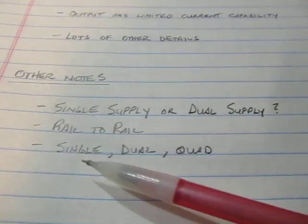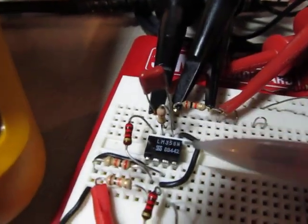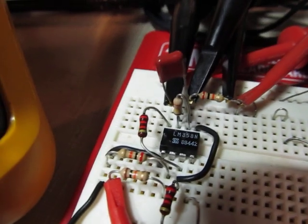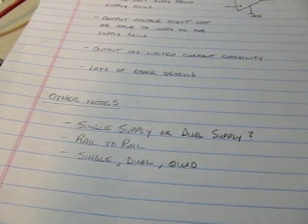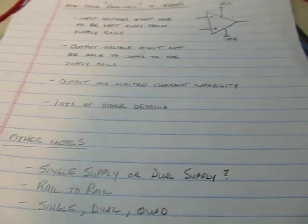And then op-amps are typically in single, dual, or quad packages. This very popular LM358 I've got in here is a dual. But depending on how many op-amps you need for your application, there's different packages. Now again, there are lots and lots of considerations for op-amps.